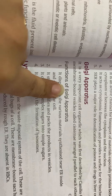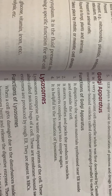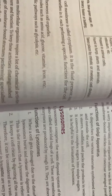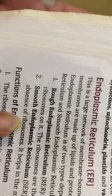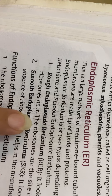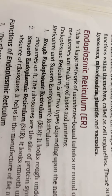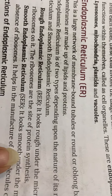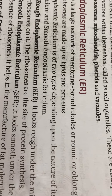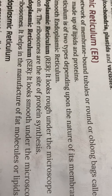To recap: the Golgi apparatus is responsible for the storage and packaging of materials. The rough endoplasmic reticulum helps in protein synthesis, and the smooth endoplasmic reticulum helps in the formation of fats and lipids.